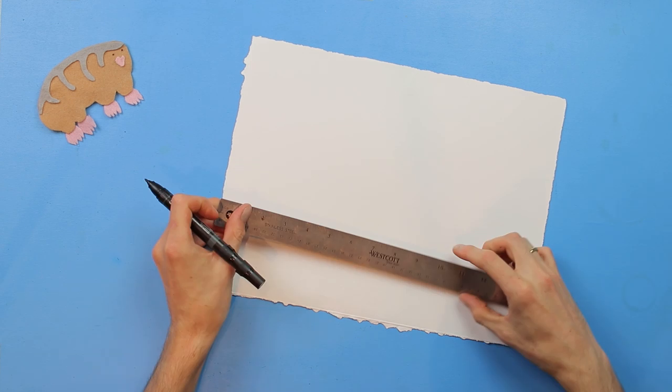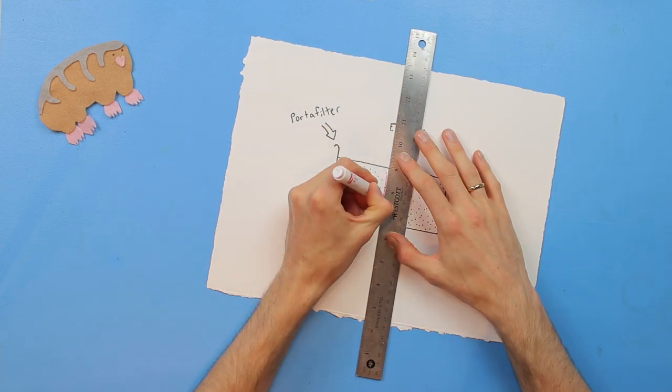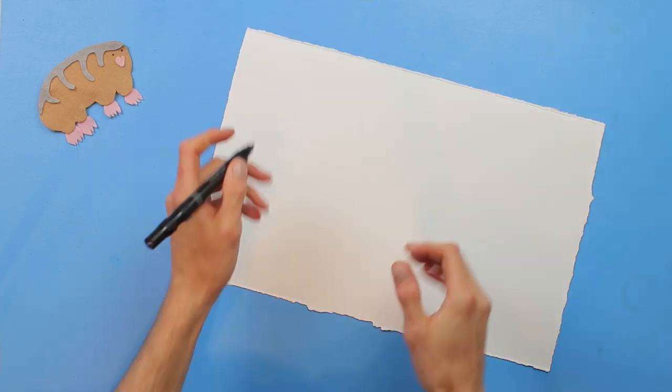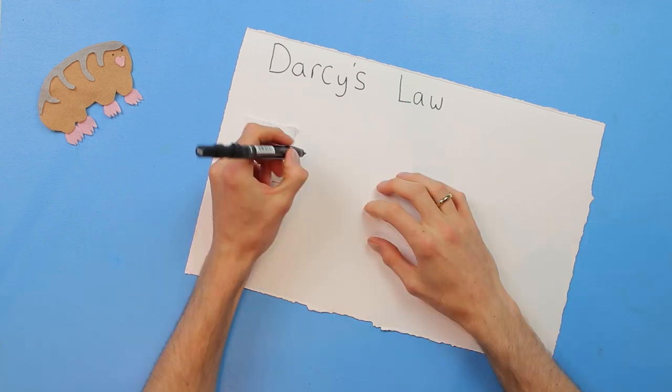If you apply the weird bean colander model to an espresso shot, you might deduce some sources of improvement. It seems important that all the coffee forms a flat bed that reaches an even distance above the bottom of the portafilter. This intuition is reinforced by Darcy's law, an equation that describes water flowing through a resistive medium.